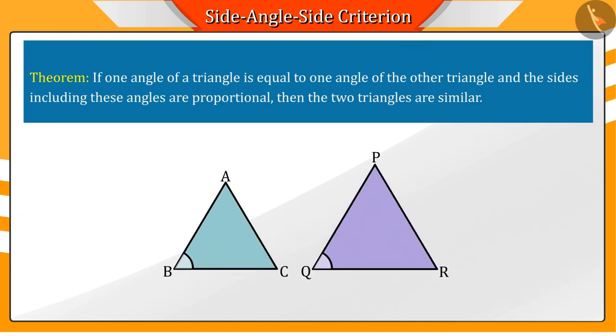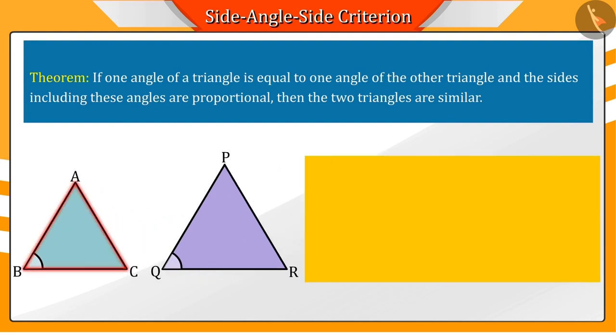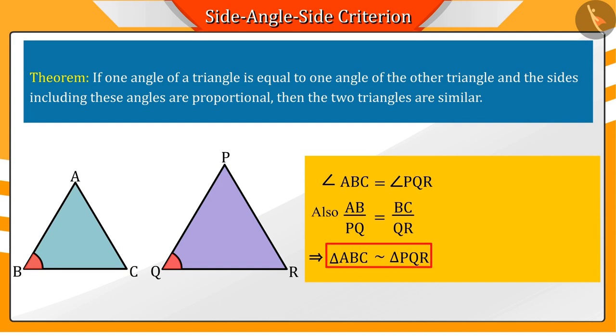Based on this activity, we can conclude that if one angle is equal to the corresponding angle of another triangle and the sides including these angles are proportional, then the triangles will be similar to each other. We call this theorem the side-angle-side, SAS criteria of similarity.